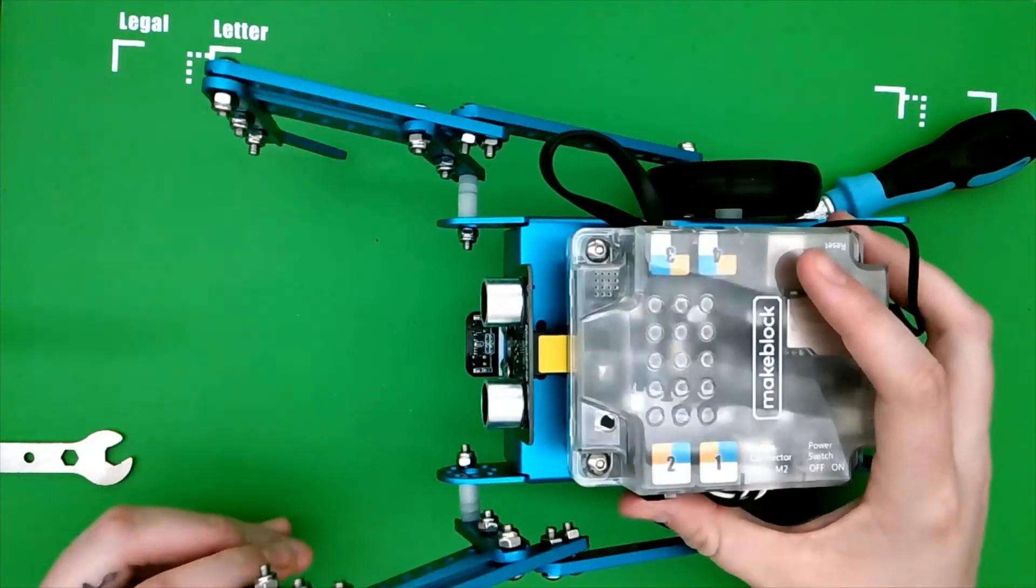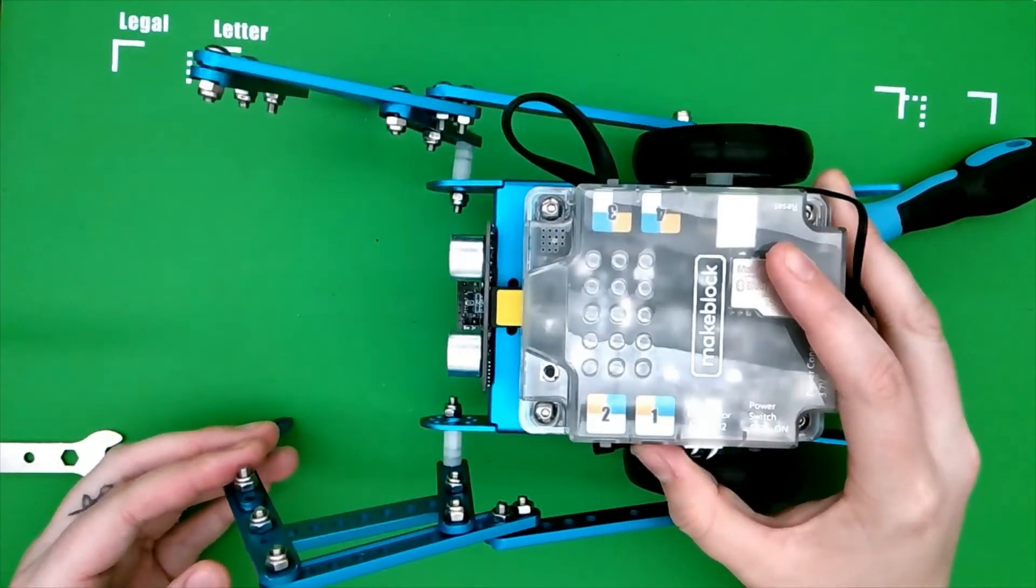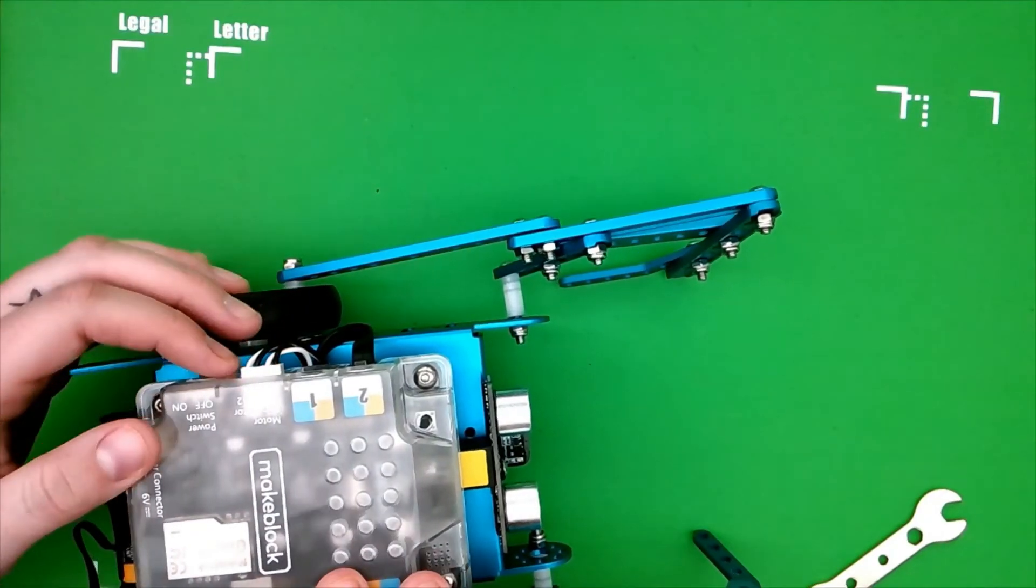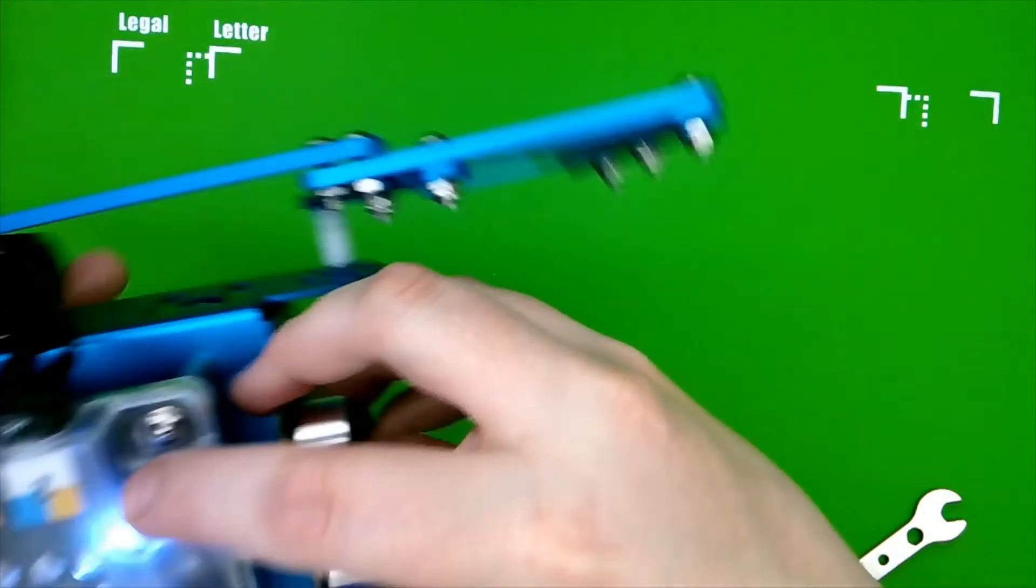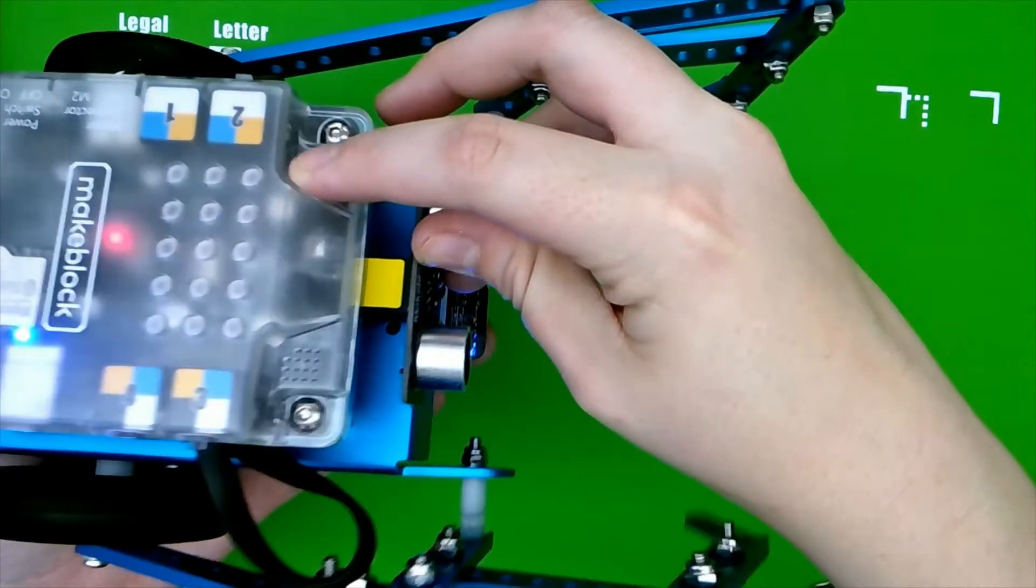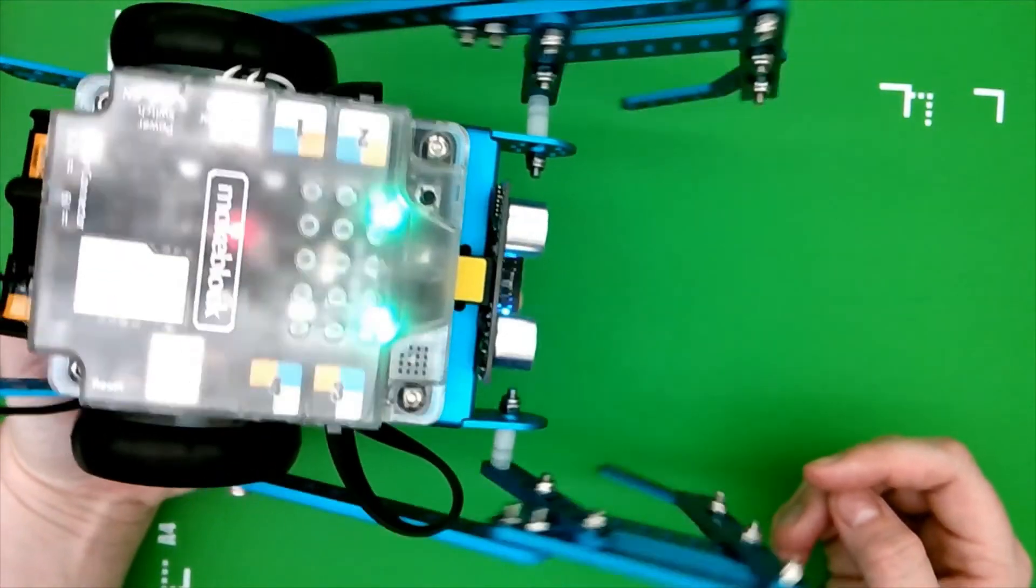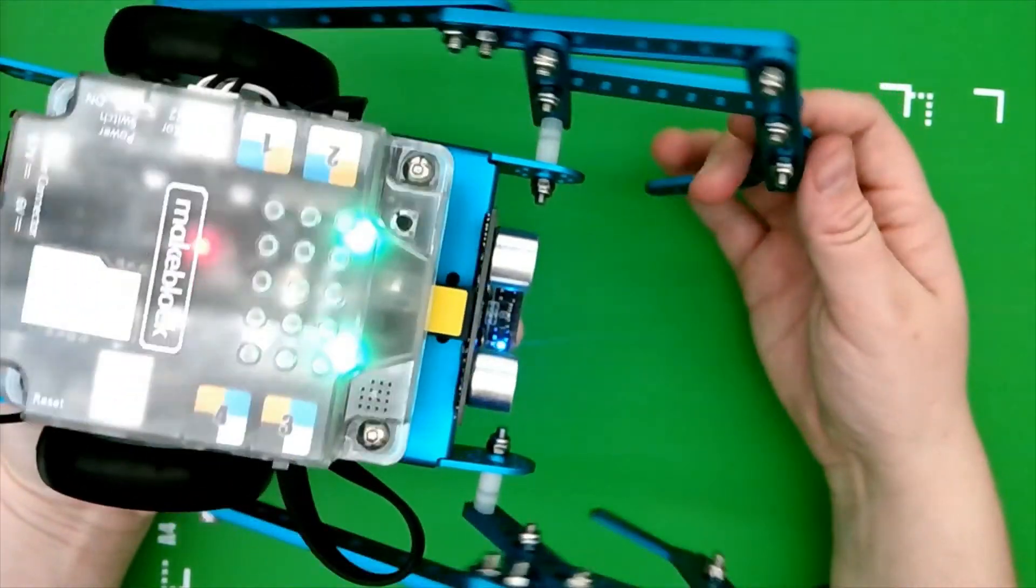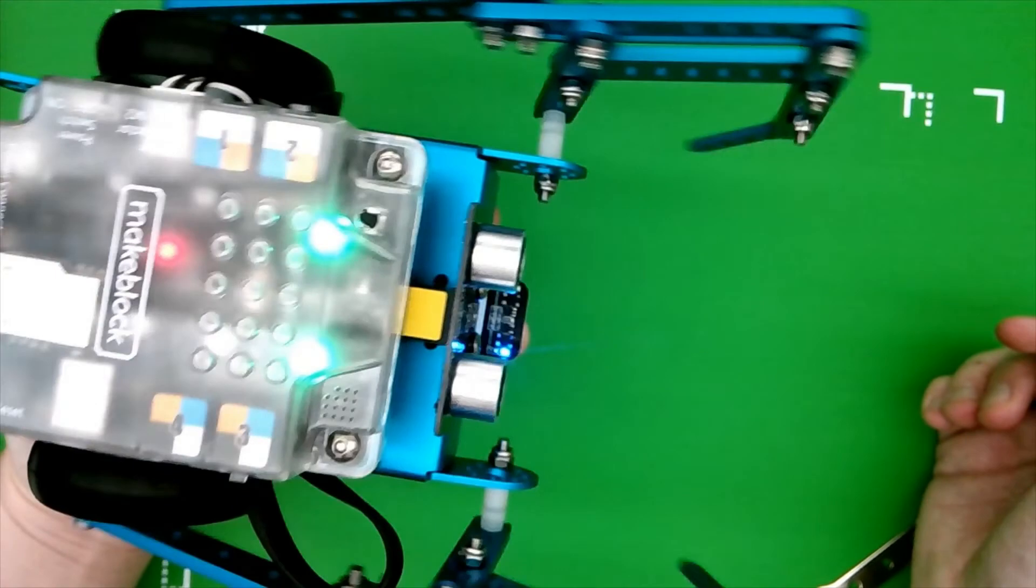I went ahead and did the other side the same way. So now your robot should be complete. And when you power it on, switch this black button. Both legs should move just like that. If they don't move you probably have something too tight and you need to loosen some screws.